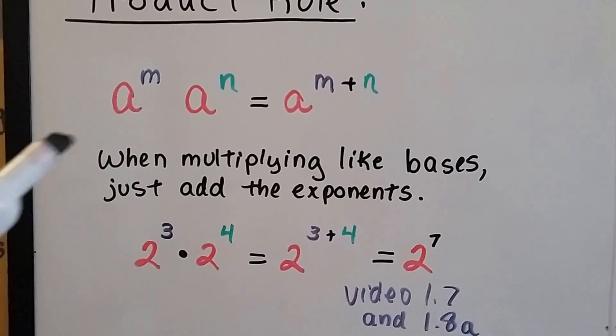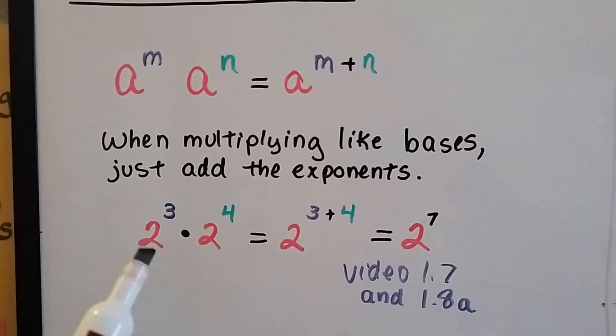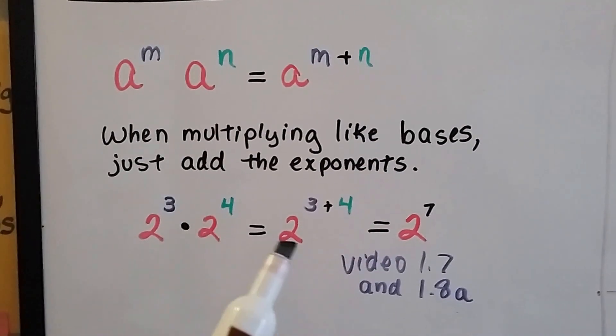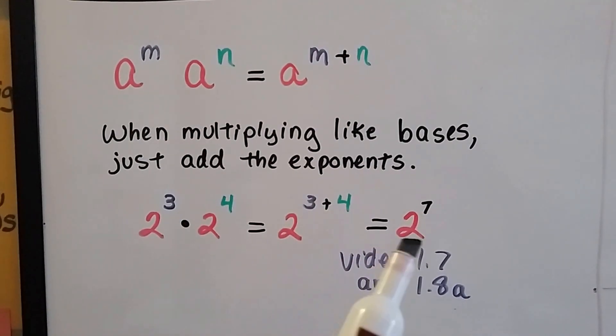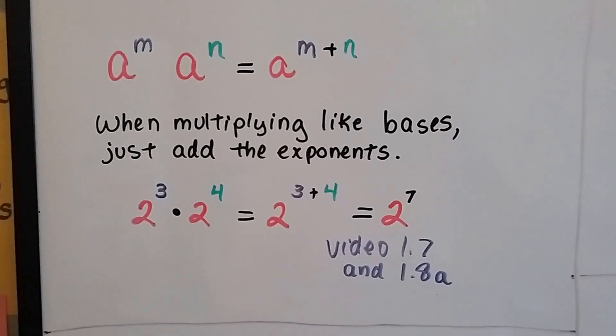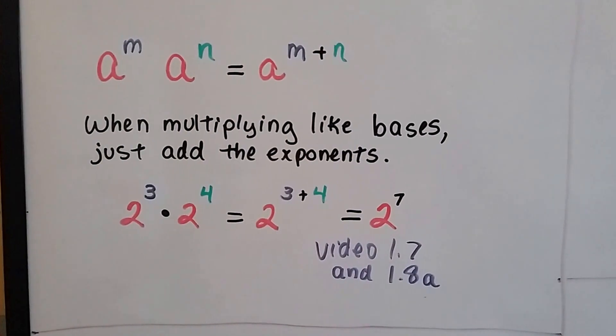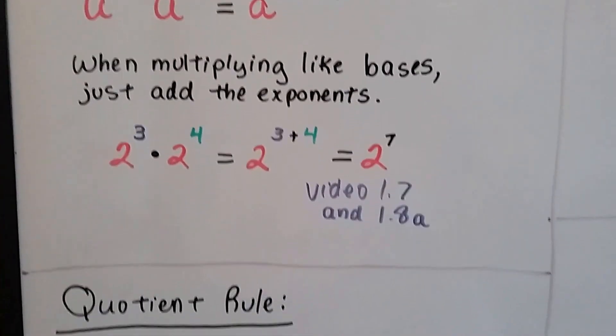So when multiplying like bases, they both have a base of a, you just add the exponents. 2 to the 3rd power times 2 to the 4th power equals 2 to the 3 plus 4, which is 2 to the 7th. We covered that in video 1.7 and 1.8a. There are going to be links in this video's description so that if you want to watch the videos you can.